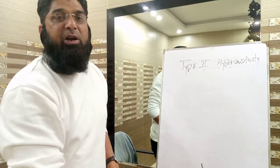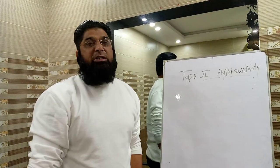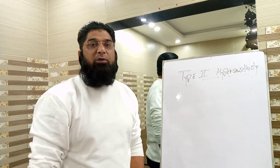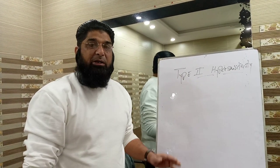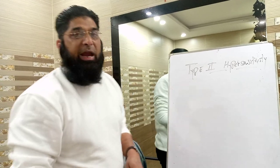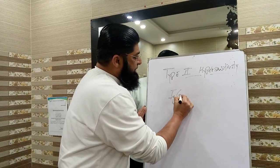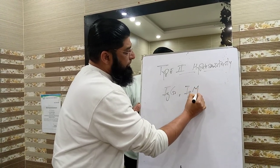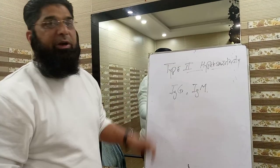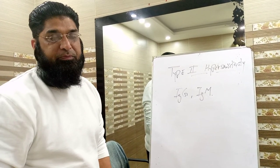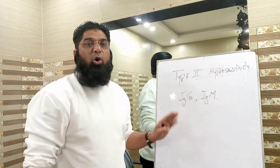Type 2 hypersensitivity reaction also involves production of antibodies, but in this case the antibodies involved are IgG or IgM. There is no role of IgA. These two antibodies are the ones involved in type 2 hypersensitivity reaction.